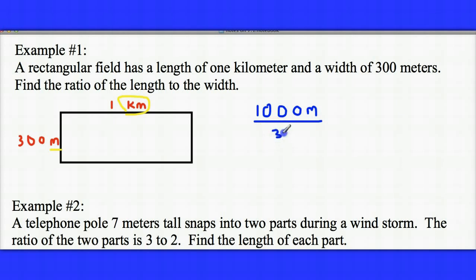And ratios have no units associated with them, so because these have the same units, meters and meters, I can cancel my units. And then I can divide both my numerator and denominator by 100, so I'll end up with a ratio of 10 to 3. But the key to this problem was making sure you had the same units.